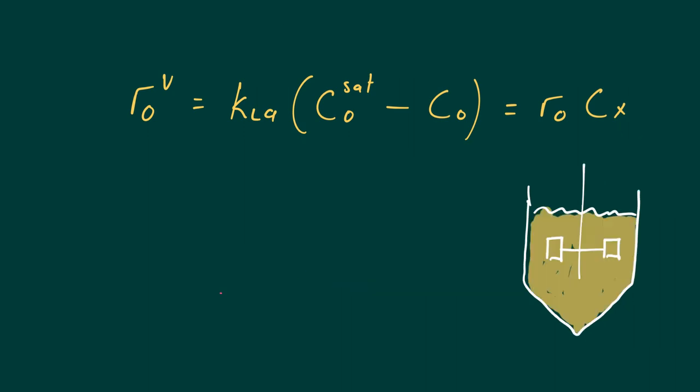Then we get to a problem where the CX has significantly increased. This is now high, it's always getting higher. At a certain point you will reach the maximum of the driving force. So the maximum of the driving force, this is a constant, that's the value of 0.2 mmol per liter. So at its best, C0 will become zero.